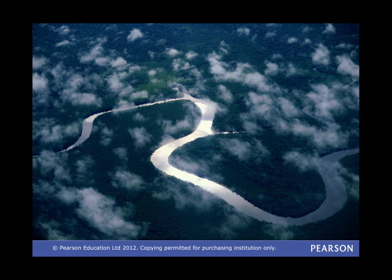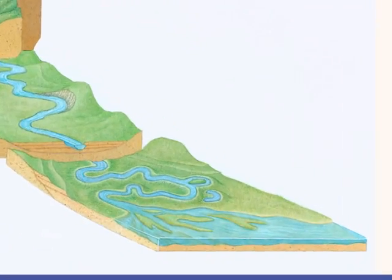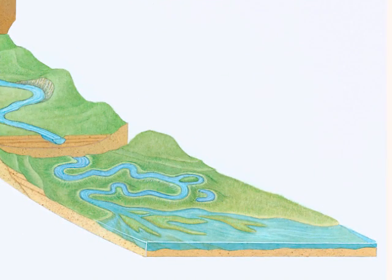As the water spreads out over the flood plain it loses energy and deposits its load. The mouth of the river is where it meets the sea.